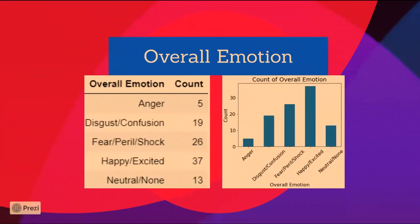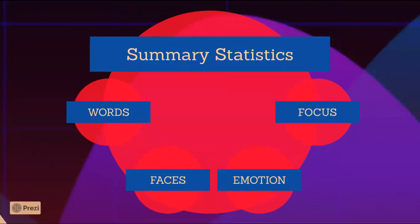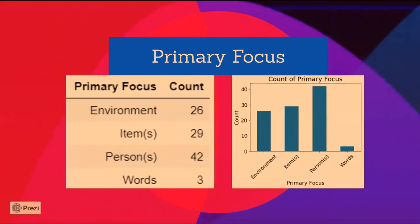I then plotted the counts of each overall emotion. We see that most of his videos have a happy/excited emotion, and anger is the emotion least used on his thumbnails. As we'll see later when I analyzed views, likes, and dislikes for each emotion, there's a reason why he uses happy/excited for most thumbnails. Finally, I plotted the counts of the primary focus of the thumbnail. A person is the most frequent primary focus, and words are the least frequent — it makes sense to focus on something visually appealing rather than words.